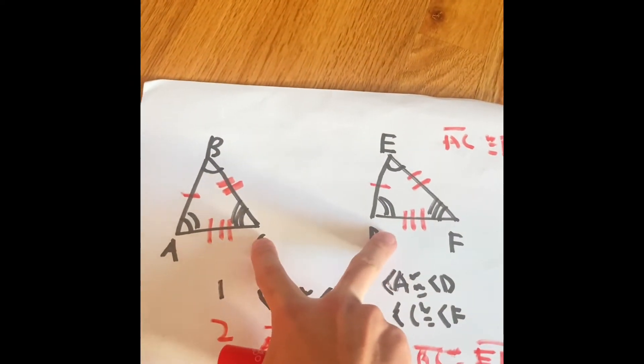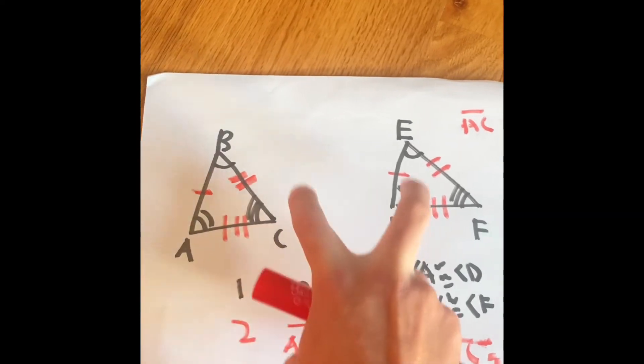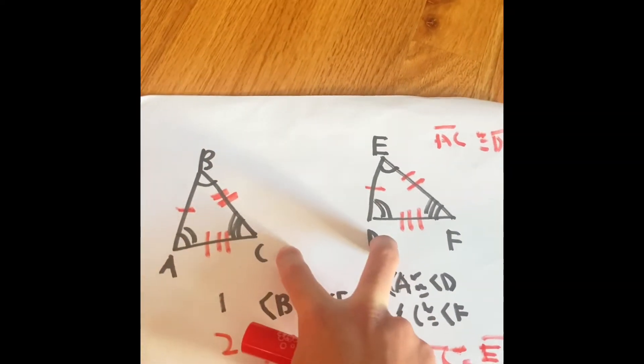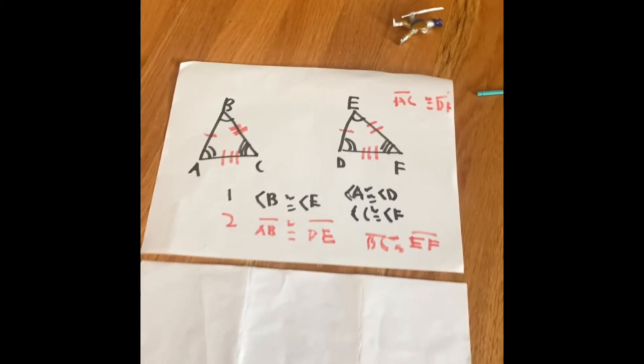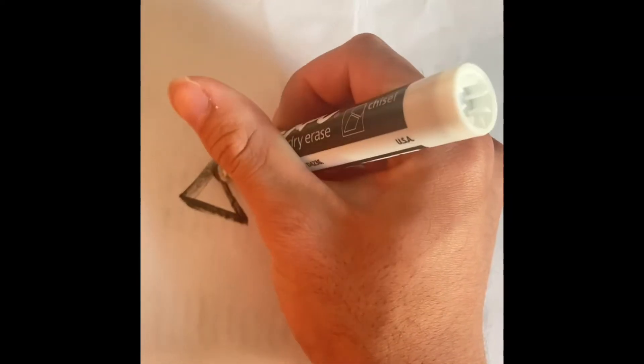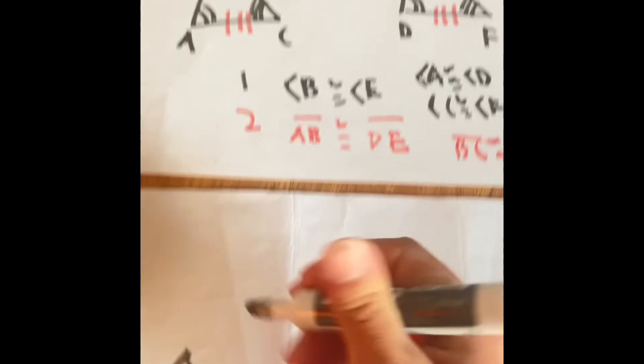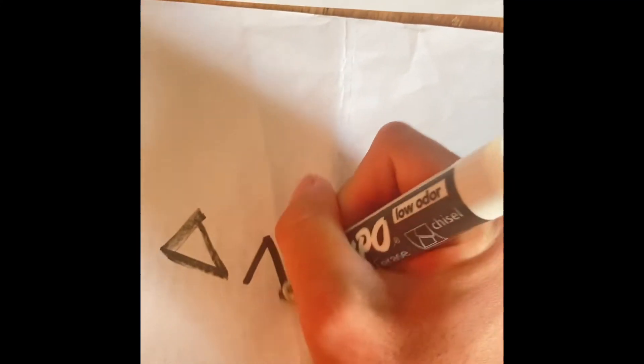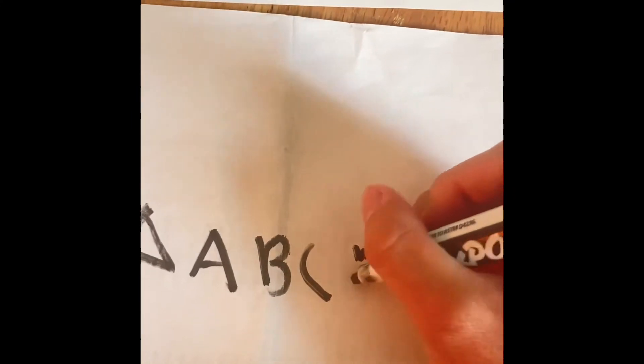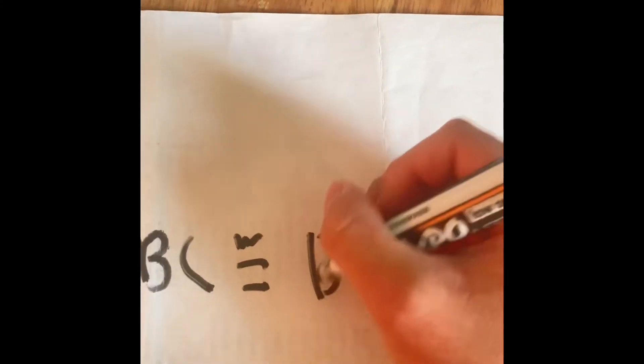We can put that into an equation. So, triangle, because these two are triangles. ABC is going to be congruent with DEF as a triangle.